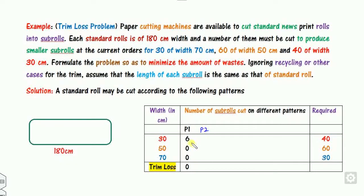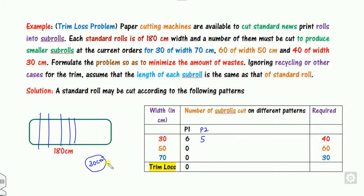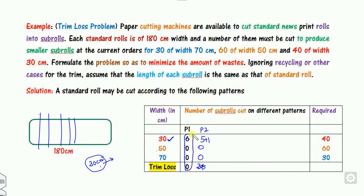Consider constructing five 30 cm pieces instead: that uses 150 cm, leaving 30 cm. Since 30 cm is itself a needed sub-roll size, this is really just the same as P1 — not a new pattern. So there is no separate P2 in this case; five 30 cm pieces is not a distinct pattern.